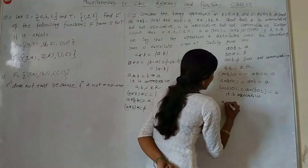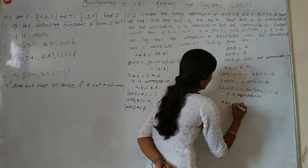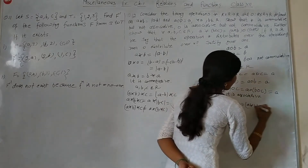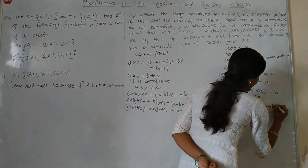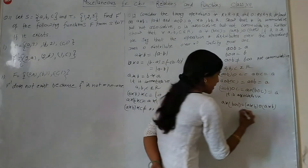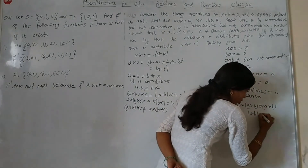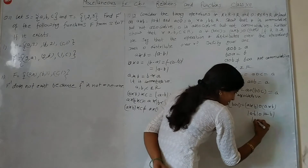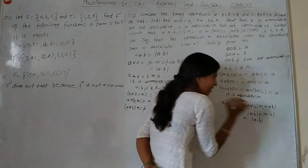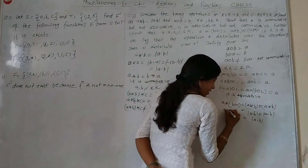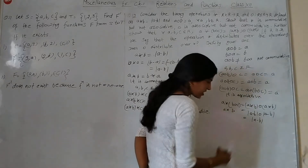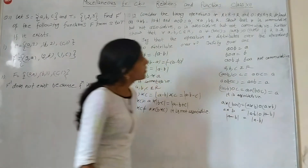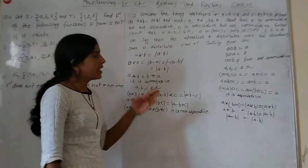Now we check distributivity. A star (B O C): here star means first minus second, and O means first element. So A star (B O C) means first element, so A star B is A minus B.